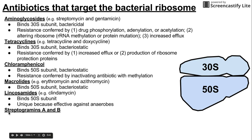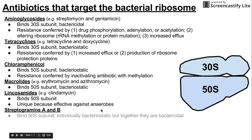Another class is the streptogramins A and B — two subclasses that act on the same pathway for a synergistic effect. Streptogramins A and B both bind to the 50S subunit. Individually they are bacteriostatic, but when used together they are bactericidal.